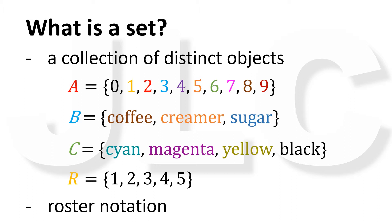This is the general definition of a set — it is a collection of any type of data. But in this video, we're only interested in sets whose elements are only real numbers. We will not consider sets with any other types of data.